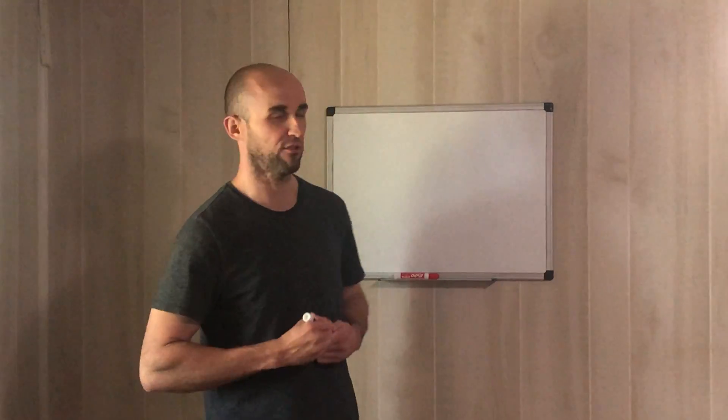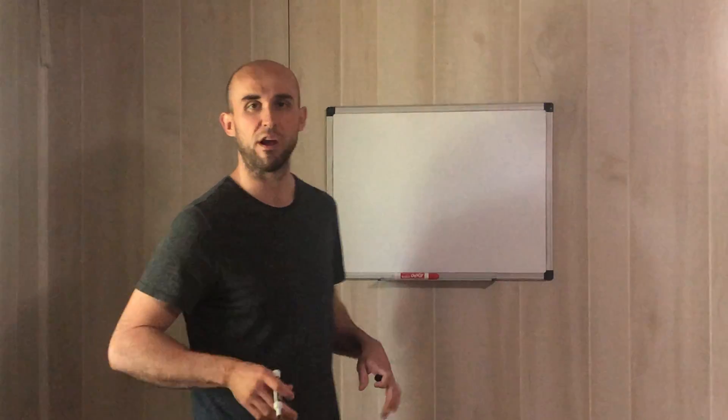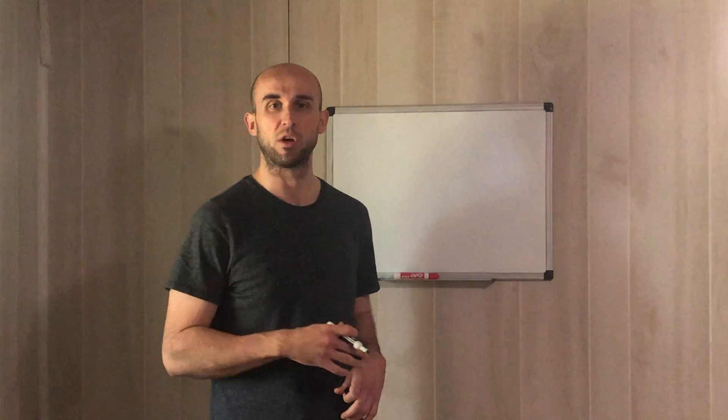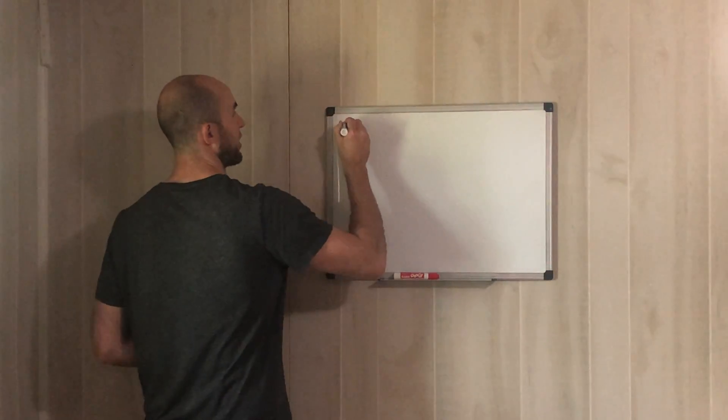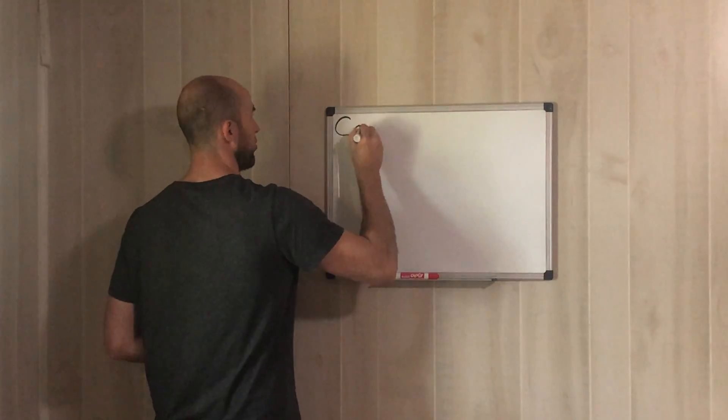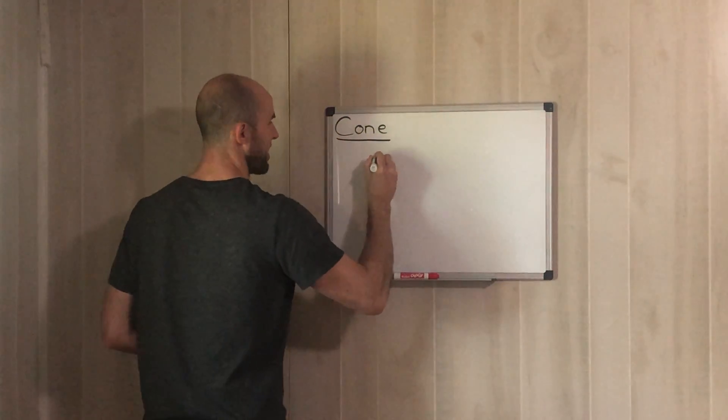Hey guys, hope you're all doing well and that your families are fine. So yesterday we started going over your final exam — we went over surface area and volume of prisms and cylinders. What we're going to go over today is the surface area and volume of a cone and a sphere. It's all for your final exam, and we're going to go over one question of each that will show up. The first figure we're going to work with is a cone.